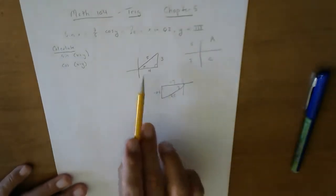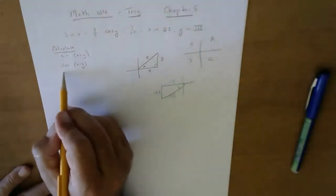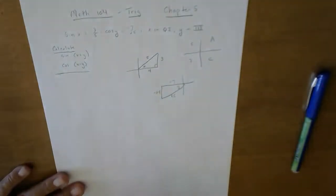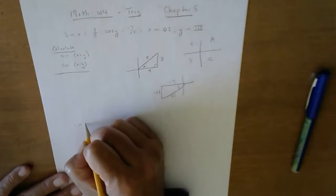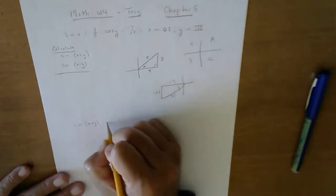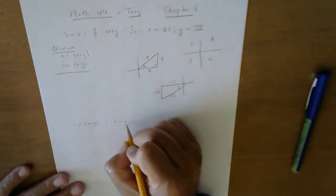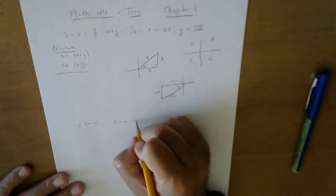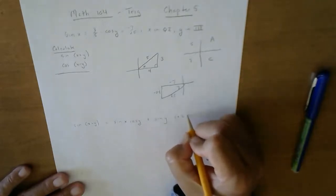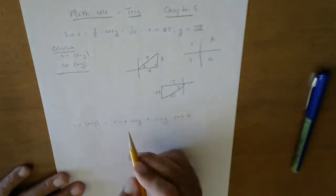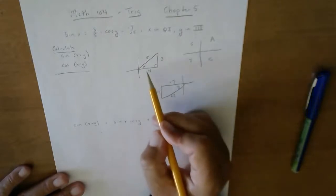Okay, so now that I have pictures of what I need to use, the question asks for find the sine of x plus y. Sine of x plus y will be the sine of the first times cosine of the second plus the sine of the second times cosine of the first.